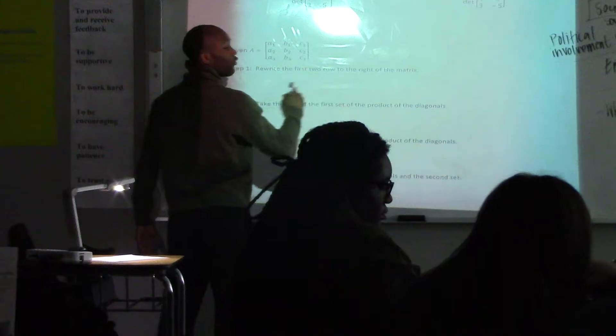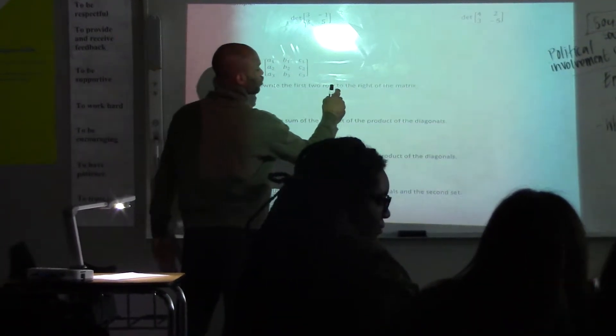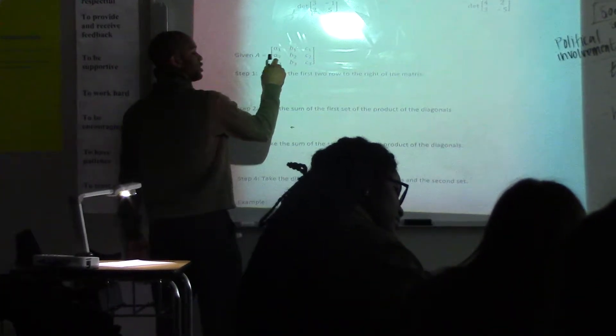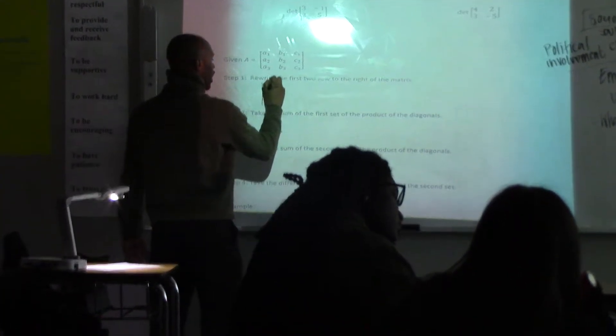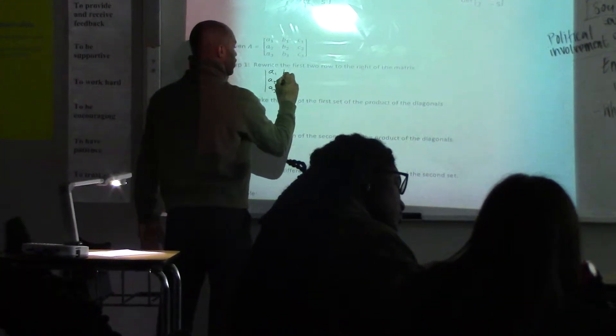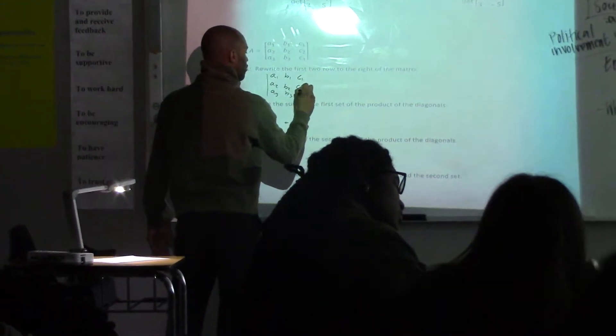So let's say we're going to come up with a formula, whereas you can just plug in your numbers, your elements, and just get you a determinant. So what you're going to do, step 1 says rewrite the first two rows to the right of the matrix. What that means is, we're going to take this matrix, matrix A.